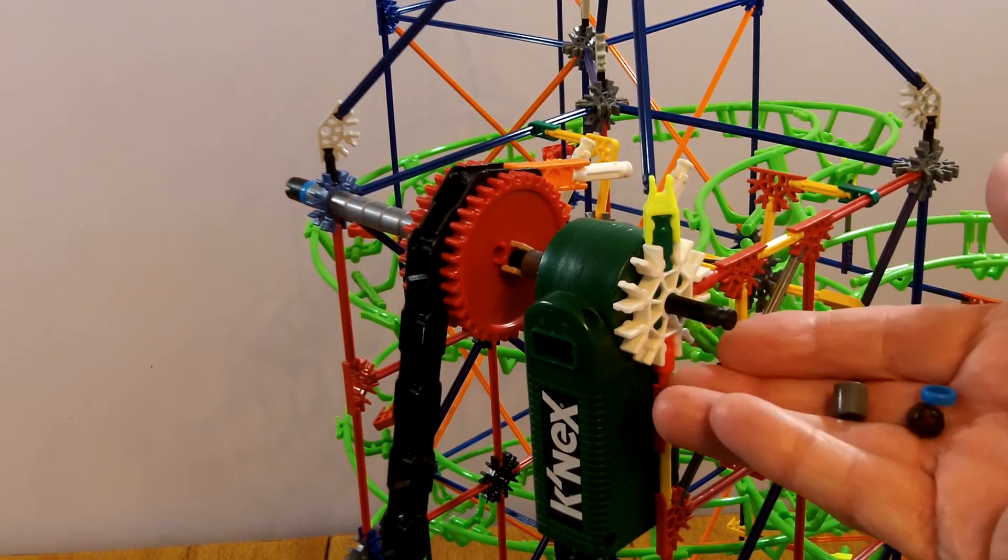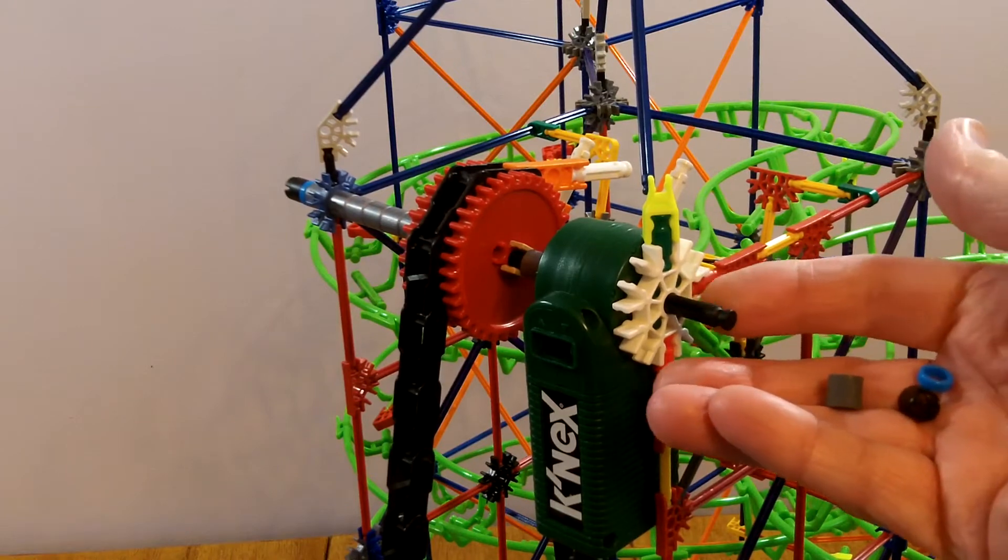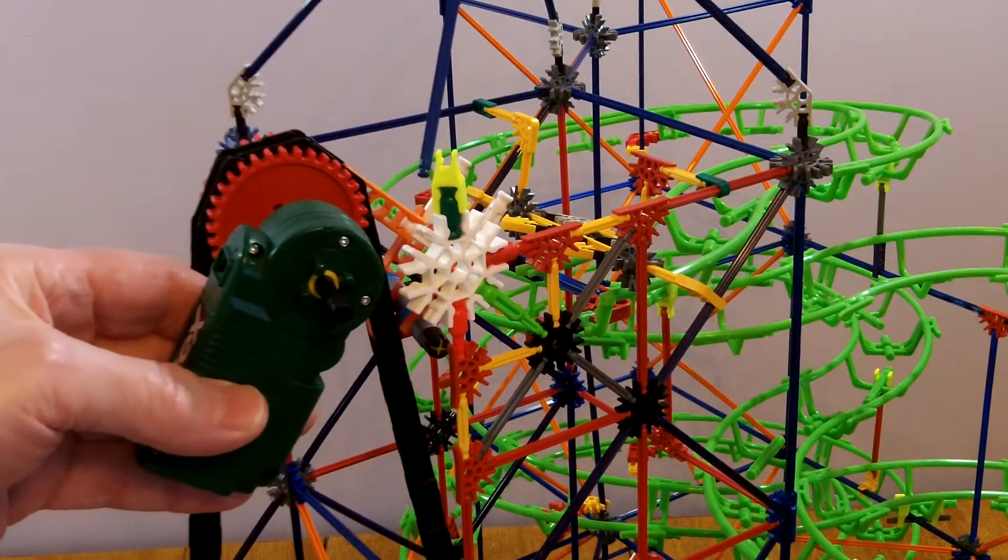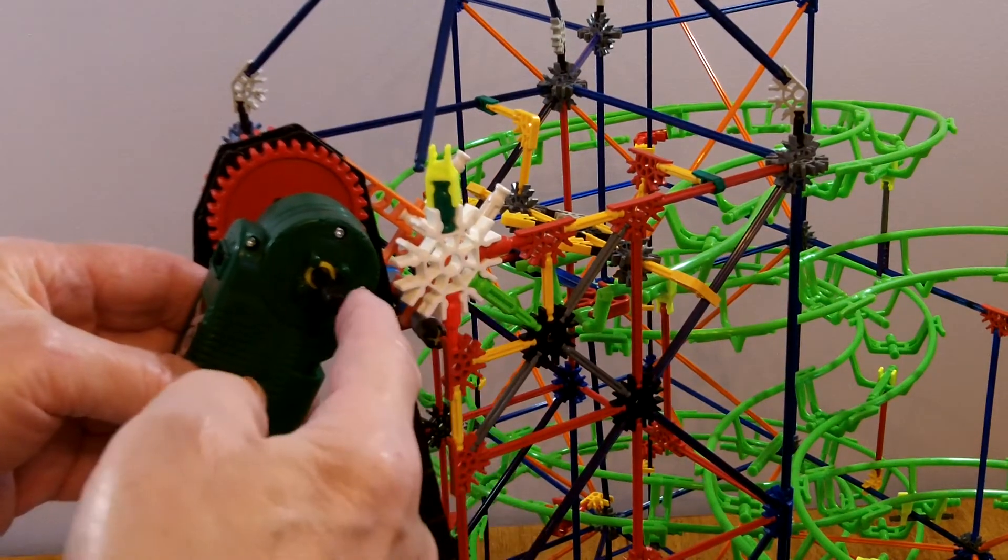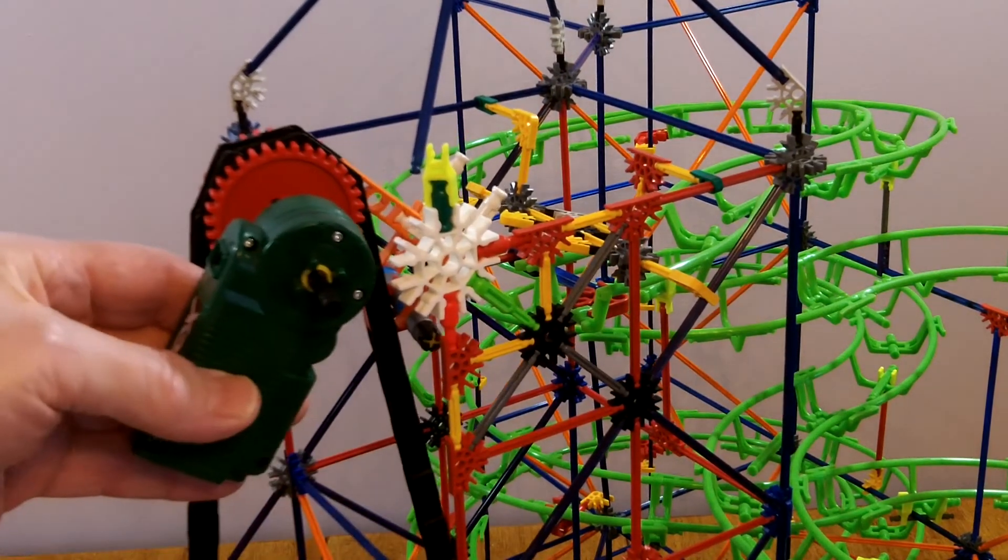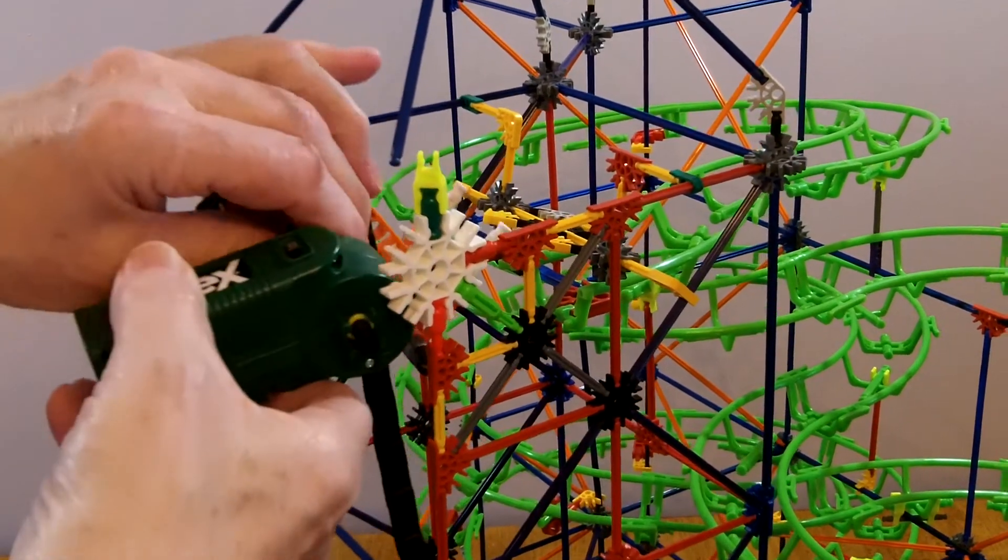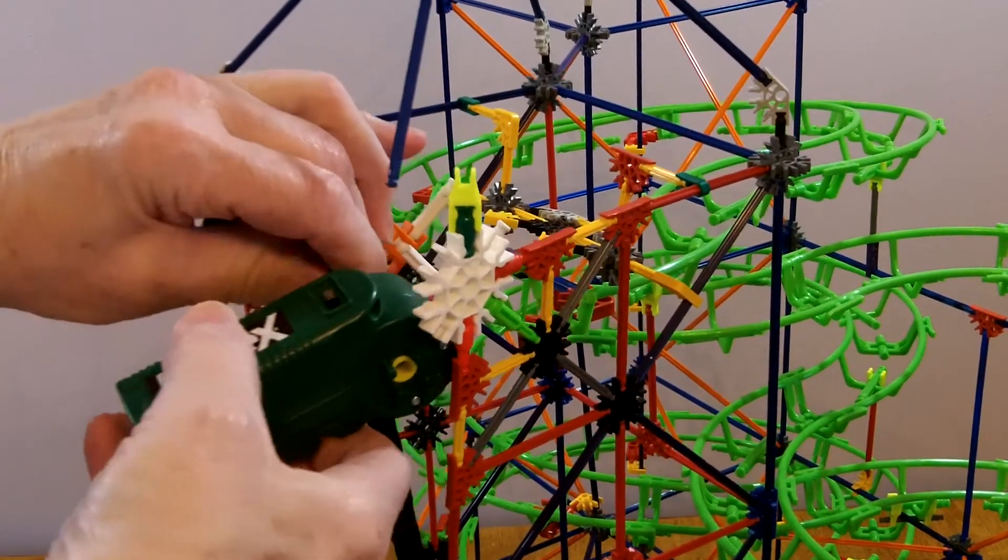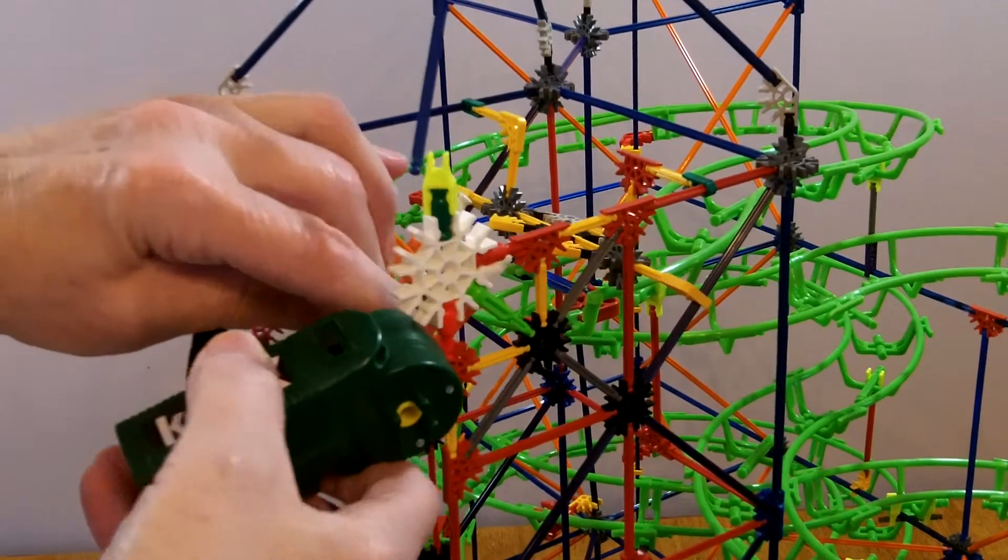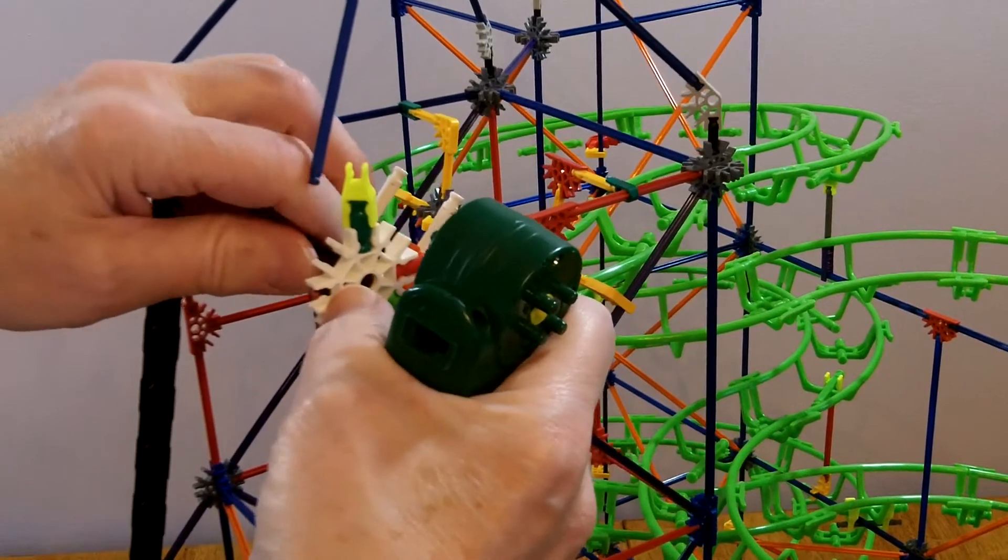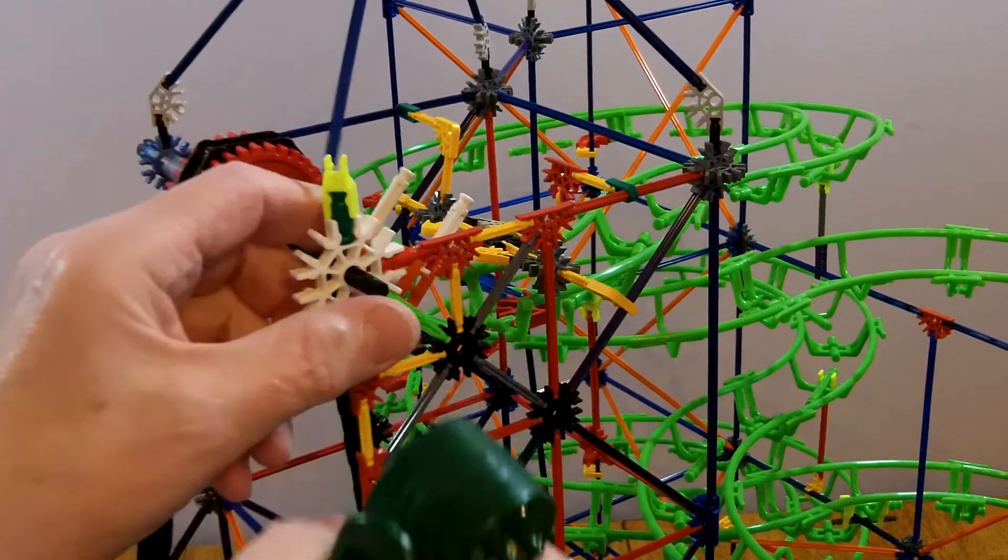First remove these three parts from the outside here. Next, pull the rod out of the support so the motor can be pulled out. Then pull the motor out and put the motor back in the support. There we go.